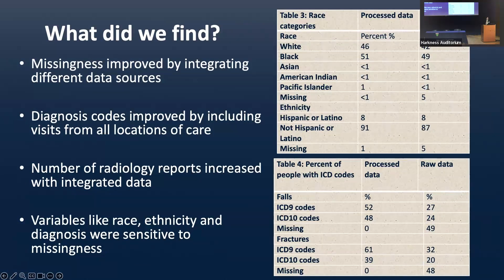Additionally, missingness improved by integrating different data sources, which is a big task in itself. Diagnosis codes improved by including visits from all locations of care. The number of radiology reports increased with data integration. Variables like race, ethnicity, and diagnosis were sensitive to missingness. Table three represents different race categories in the data — the processed data better represents almost all different races, with much lower missingness compared to raw data. Table four represents ICD diagnosis codes, which are dramatically improved in the processed data compared to raw data.